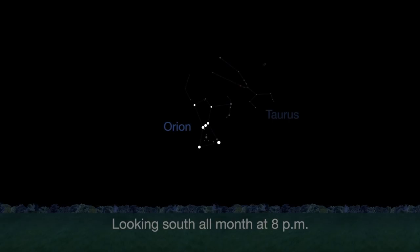Orion is easy to find. Draw an imaginary line through his belt stars to the Pleiades and watch him chase them across the sky forever.